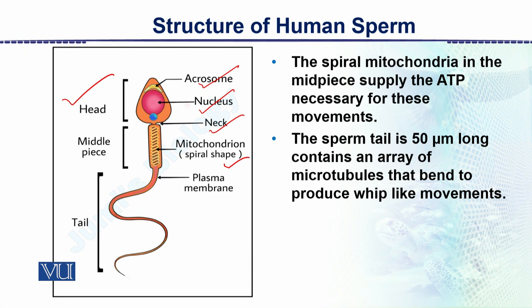The sperm is a complete single cell. Inside it there is the head, then the middle piece, and then the tail. The sperm tail is about 50 micrometers long and contains an array of microtubules. The sperm moves through the reproductive tract with the head in front, and the tail has a wriggling movement that provides thrust.